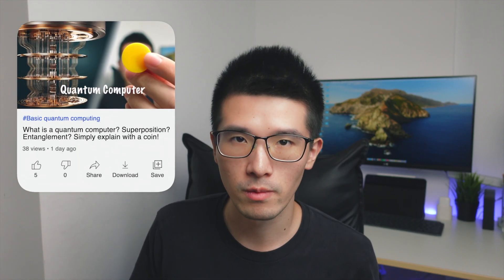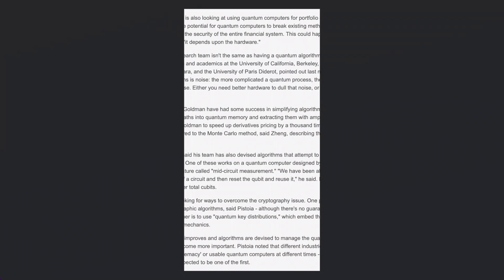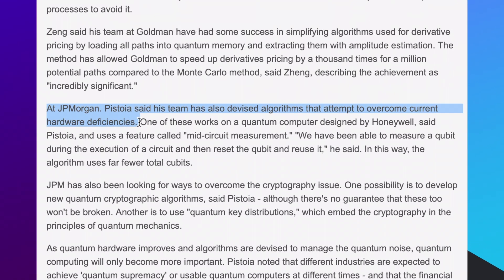Because for nowadays quantum computers, there's not enough qubits for them to implement their algorithm. If you don't know what is qubit and why we need more of them, you can check out this video over here. So for JP Morgan, they took a different way. They claimed that they were able to measure qubit during the execution of a circuit and then reset qubit and reuse it. In this way, they can work their algorithm on fewer qubits. I think it's a smart way to do it with the contemporary quantum computer technology. But in the future, we still have to create a quantum computer with more qubits to cater for the more use cases.